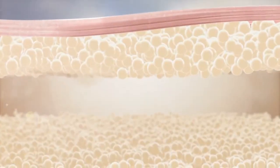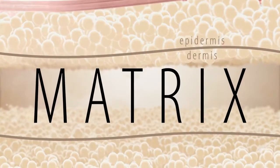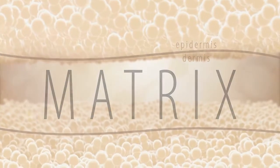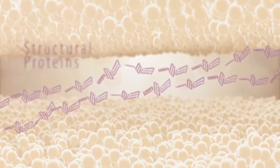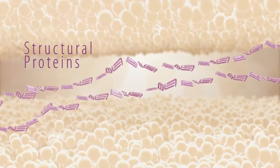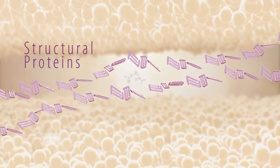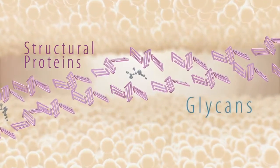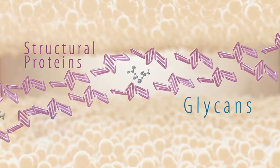Underneath the top layer of our skin is a firm, cushiony material called the matrix. The matrix contains structural proteins that form a mesh-like webbing which holds a unique composition of moisture-trapping glycans.